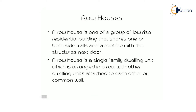A row house is one of a group of low-rise residential buildings that share one or both side walls and a roofline with the structure next door. A row house is a single-family dwelling unit arranged in a row with other dwelling units attached to each other by a common wall.